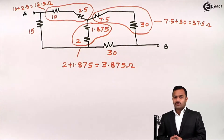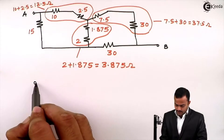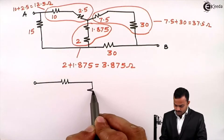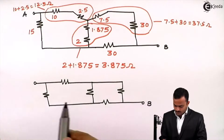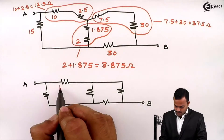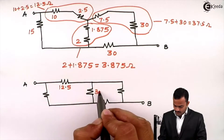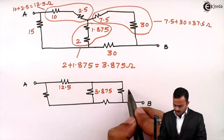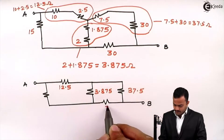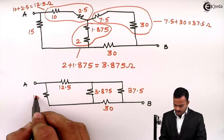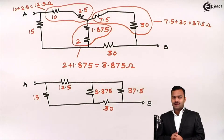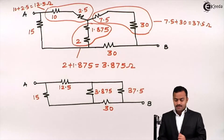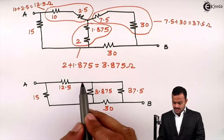So once again the circuit gets reduced and the equivalent circuit will look like this. The values are 12.5 ohm, 3.875 ohm, 37.5 ohm, 30 and 15. Let me see carefully — I cannot proceed further without another application of delta-star or star-delta transformation. So once again I have to transform this delta into star.